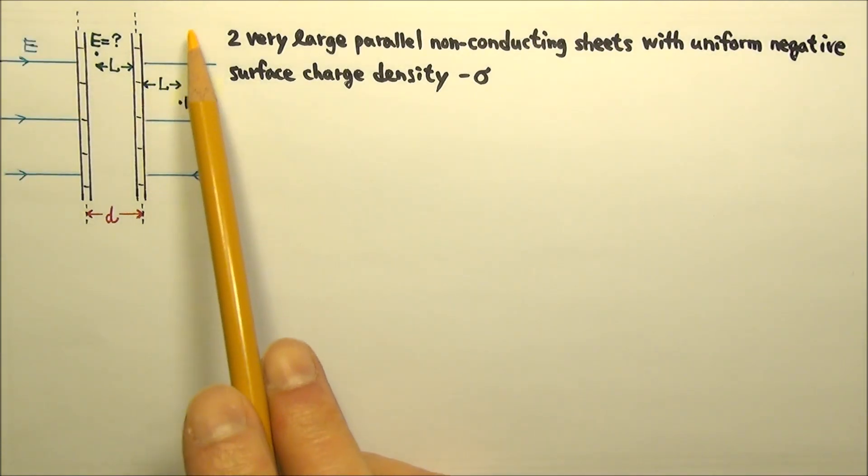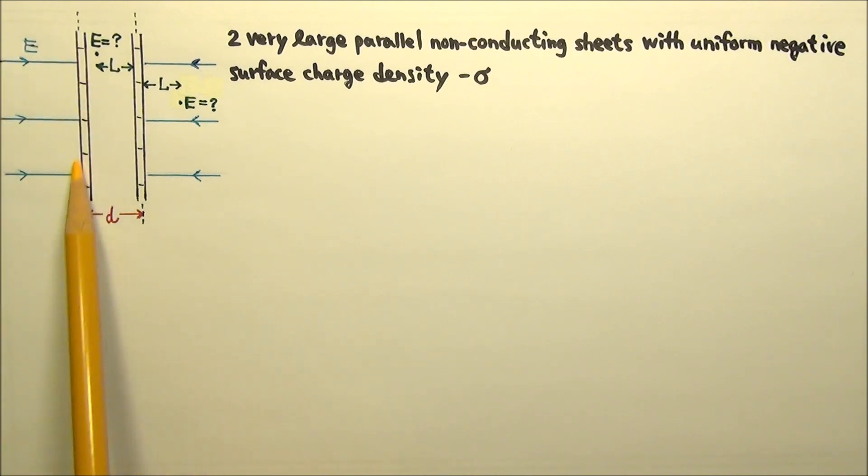Which means the fields are uniform on the right side, uniform on the left side, and uniform in between.